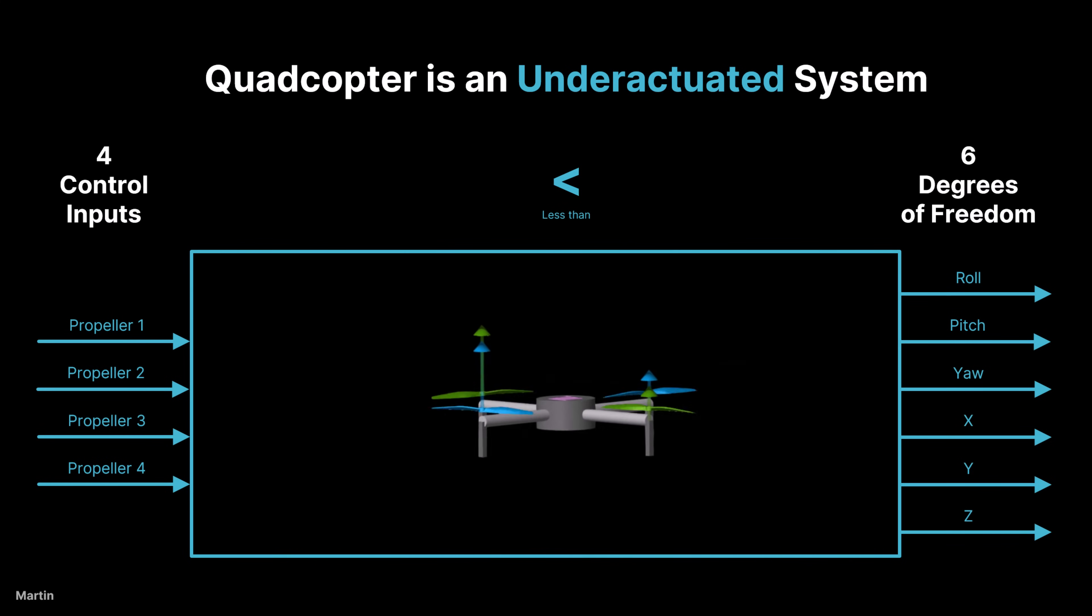As a result, a quadcopter cannot generate independent lateral X, Y motion directly. Instead, it must tilt, roll, or pitch to create horizontal movement. This is why control design for quadcopters is an essential part, especially when developing autonomous flight controllers. It relies on complex control algorithms, for example, PID, nonlinear control, model predictive control, to stabilize and move efficiently.